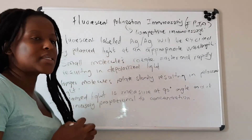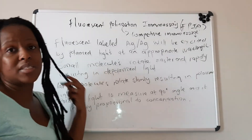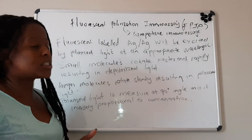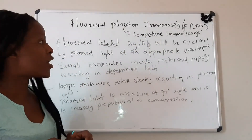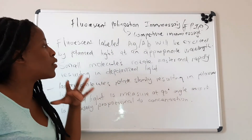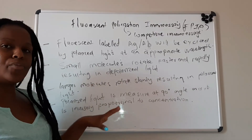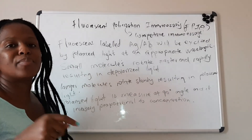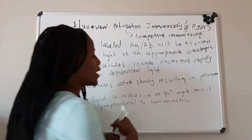If you get a question asking what is the principle of fluorescent polarization immunoassay, you will say that the fluorescent labeled antigen or antibody will be excited by polarized light at an appropriate wavelength. Smaller molecules will rotate faster and rapidly, resulting in depolarized light, whereas larger molecules will rotate slowly, resulting in polarized light. The polarized light is then measured at a 90-degree angle and is inversely proportional to the concentration of the analyte.